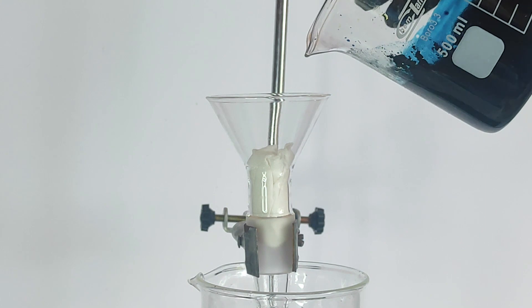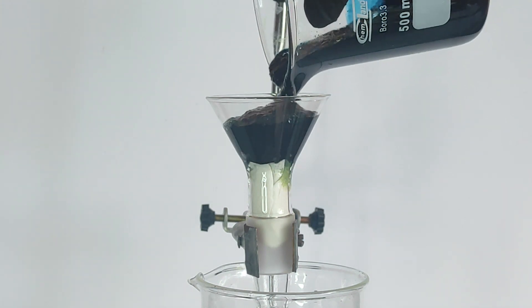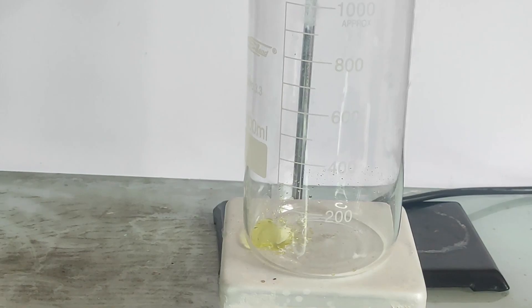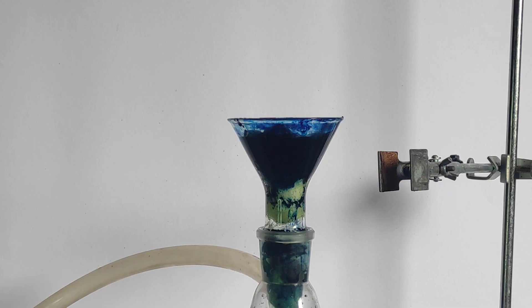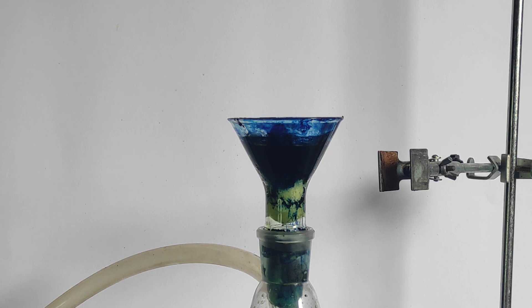Next I've set up a gravity filtration apparatus. This method of filtering was really slow and it wasn't really worth it, so I've just tried to vacuum filter it. Vacuum filtration was way faster and it could also dry our Prussian blue better.